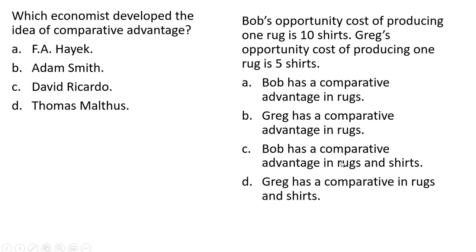You can't have a comparative advantage in both goods, so C is wrong and D is wrong for the same reason — that's not possible. So our possible answer choices are A and B, and the correct answer is going to be B.